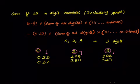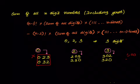Sum of all of them is 1110. Now we want only 3 digit numbers, but 023 and 032 are not 3 digit numbers. So that sum has to be subtracted. That's 23 plus 32, which equals 55. We need to subtract 55 from 1110.